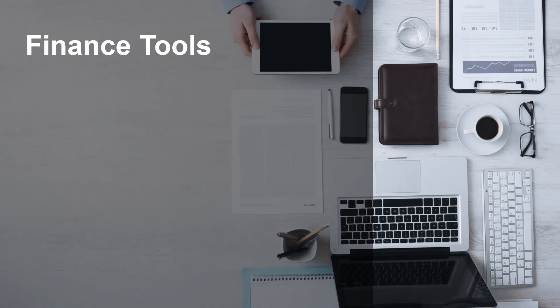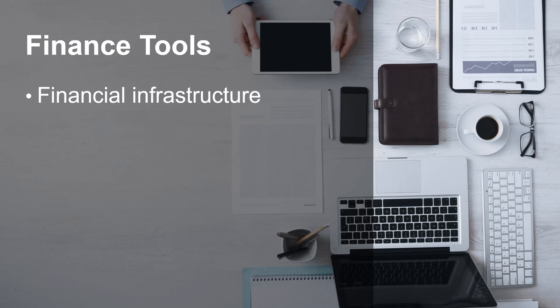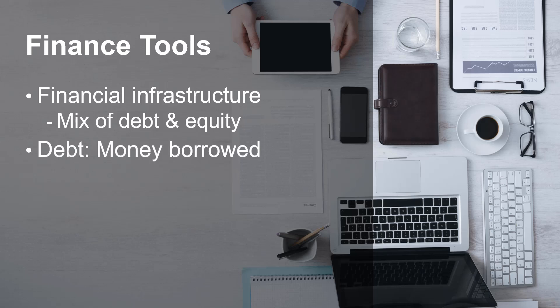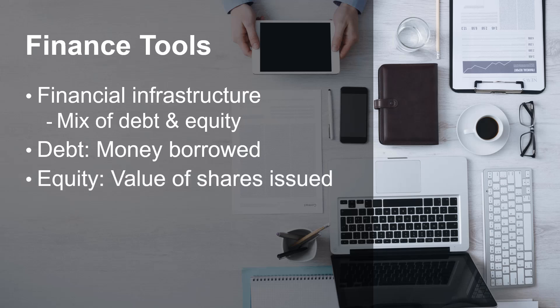Here's another way to look at project finance. In general, companies rely on a financial infrastructure to finance their operations using a specific mix of long-term debt and equity. Debt is an amount of money borrowed by one party from another, whereas equity is the value of the stock shares issued by a company. Lending institutions typically provide loans to fund projects while equity investors or sponsors typically provide cash funding. A special purpose entity or special purpose vehicle is a legal entity created for the purposes of just the project. It has no assets other than the project itself, and this arrangement protects the project sponsor's assets in case of project failure.